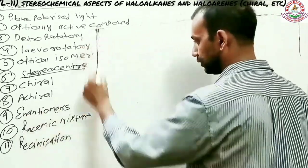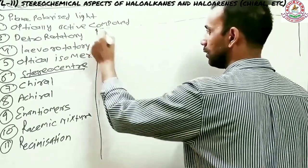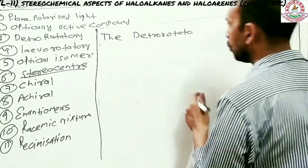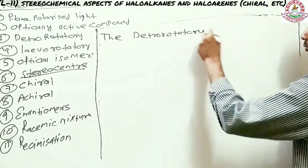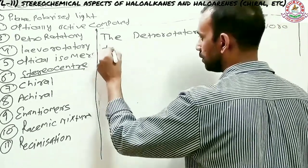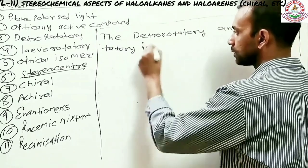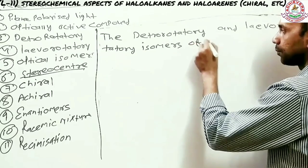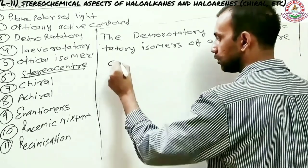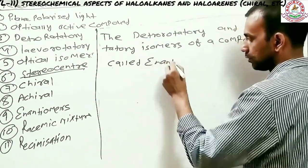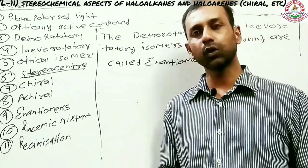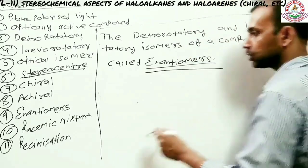The next topic is enantiomer. The dextrorotatory and levorotatory isomers of a compound are called enantiomers. So if a compound has a dextro form and a levo form, this pair of isomers is specifically called an enantiomeric pair.